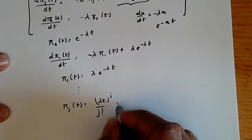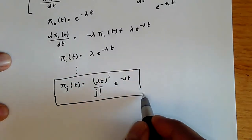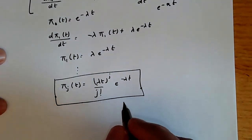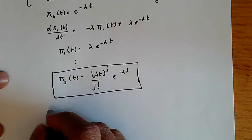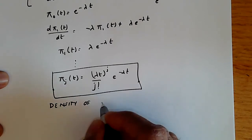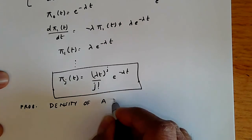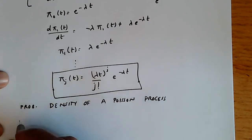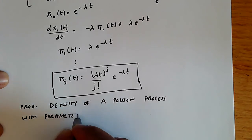The result is π_j(t) = (λt)^j / j! · e^{−λt}. This is the probability of j arrivals in time t, and if you remember from probability class, this is nothing more than the probability mass function of a Poisson process with parameter λt.